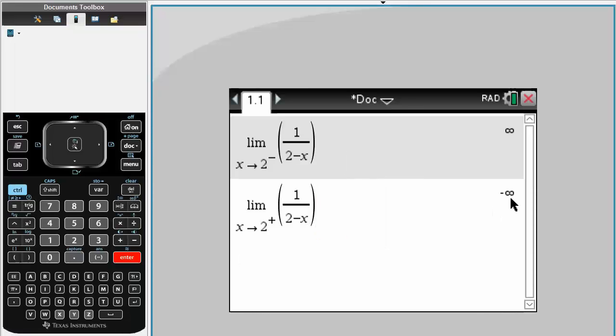You'll get negative infinity. This is saying we have a number like for x 2.001, so this would be a negative small number. That's why we have negative infinity.